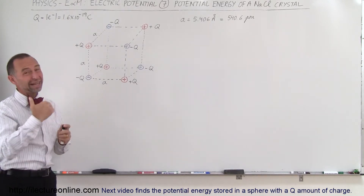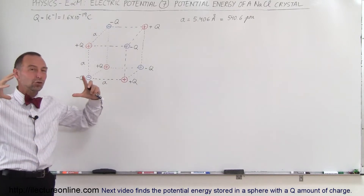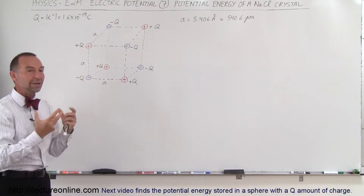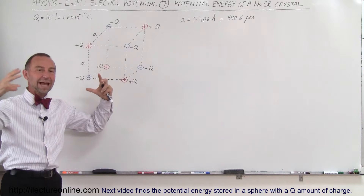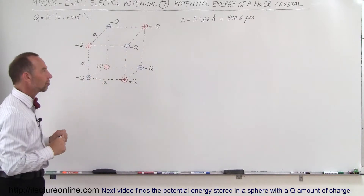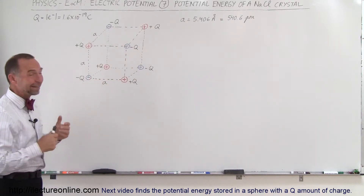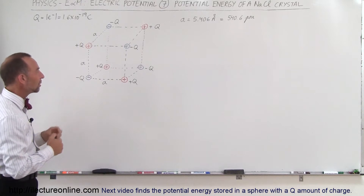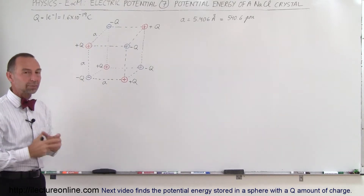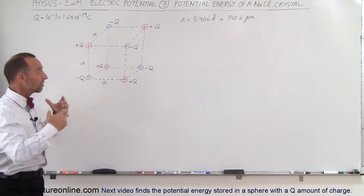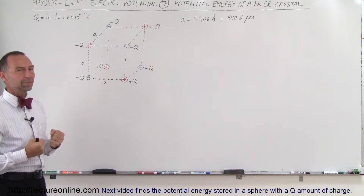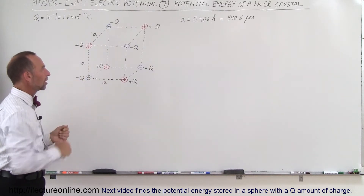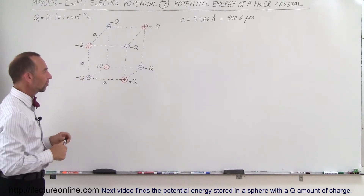The question is will it be positive energy or negative energy? Positive energy means that you have to do work to get it all put together. Negative energy means that they would naturally settle into a crystalline structure. The guess is that it's probably negative potential energy because we know that those are very stable crystals and it takes a lot of energy to break them apart. So let's figure out how to find the total potential energy within a crystal like that.